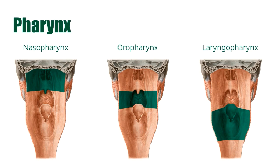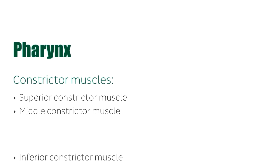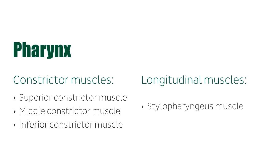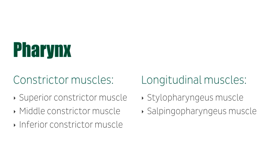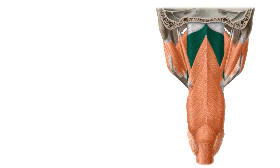In this tutorial, we will discuss the muscles that make up the walls of the pharynx. The muscles of the pharynx are organized into two groups based on the orientation of the muscle fibers. The fibers of the constrictor muscles are orientated in a circular direction relative to the pharyngeal wall, and the list includes the superior, middle, and inferior constrictor muscles. Whereas the fibers of the longitudinal muscles are oriented vertically, and the list includes the stylopharyngeus, salpingopharyngeus, and palatopharyngeal muscles.